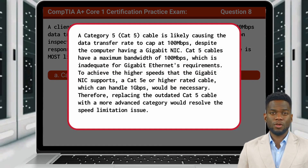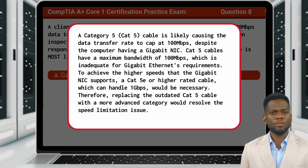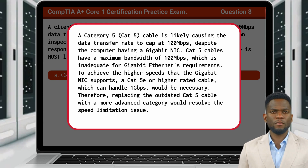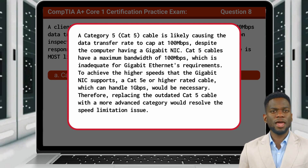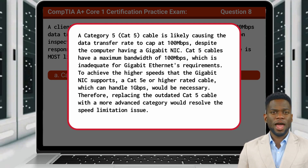A Category 5 or CAT5 cable is likely causing the data transfer rate to cap at 100 megabits per second despite the computer having a gigabit NIC. CAT5 cables have a maximum bandwidth of 100 megabits per second, which is inadequate for gigabit Ethernet's requirements. To achieve the higher speeds that the gigabit NIC supports, a CAT5e or higher-rated cable, which can handle 1 gigabit per second, would be necessary. Therefore, replacing the outdated CAT5 cable with a more advanced category would resolve the speed limitation issue.